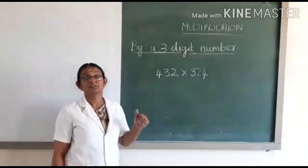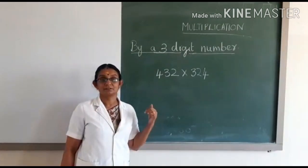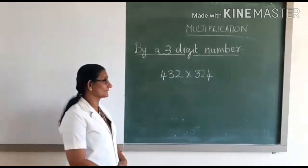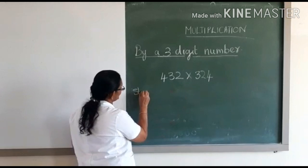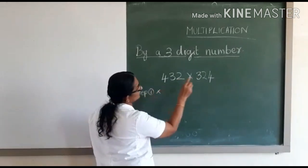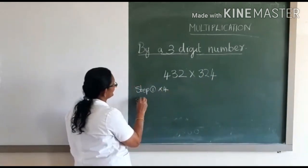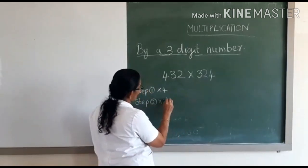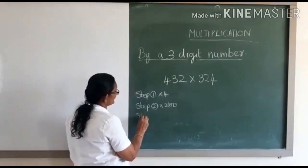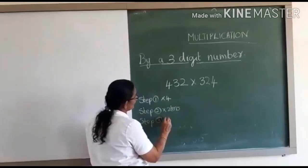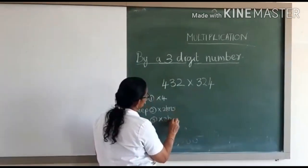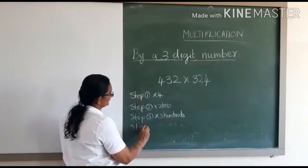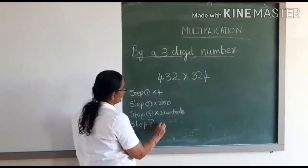We have three steps in the previous type of multiplication, that is with two digits. Here we have four steps. The first step is to multiply the number with the ones digit. The second step is to multiply the number with the tens digit. The third step is to multiply the number with the hundreds digit. And the fourth step is to add the products.